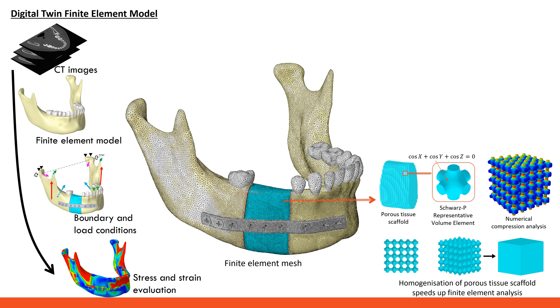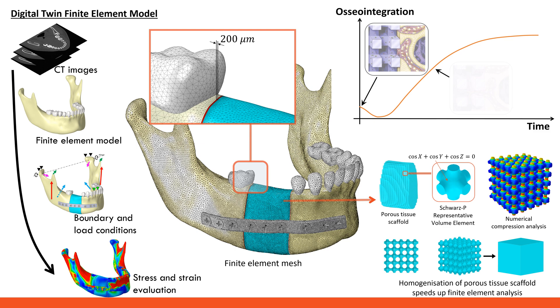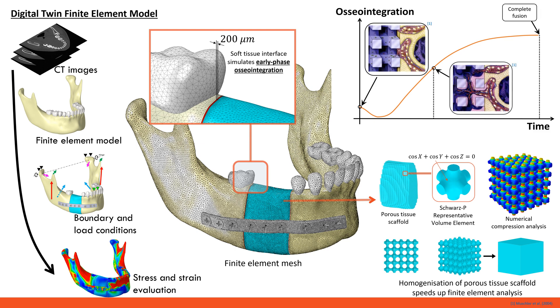The second notable feature of our model is the inclusion of a thin, soft tissue layer between the host bone and each side of the scaffold. This soft tissue layer is representative of early phase osseointegration following implantation of the scaffold, and prior to the substantial ingrowth of bony tissues into the scaffold that occurs later in the osseointegration process. Let's run this finite element model and visualize some of the results.